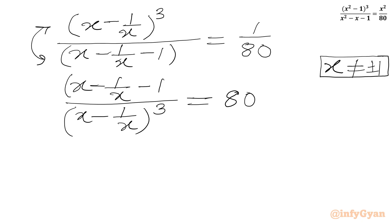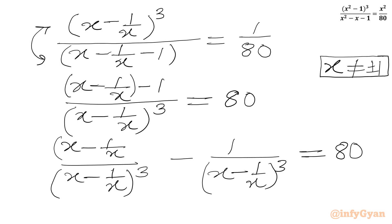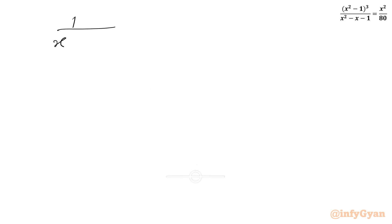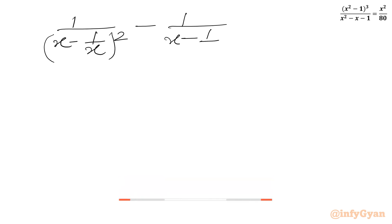Now I will split our numerator with the denominator. So I can write: x minus 1 over x, over x minus 1 over x whole cubed, minus 1 over x minus 1 over x whole cubed, equal to 8. We can cancel, and the power will be 2 in the denominator, giving 1 over x minus 1 over x whole squared, minus x minus 1 over x whole cubed, equal to 8.